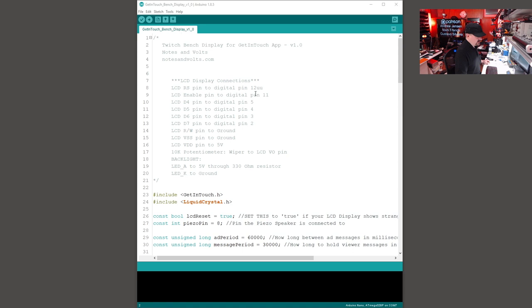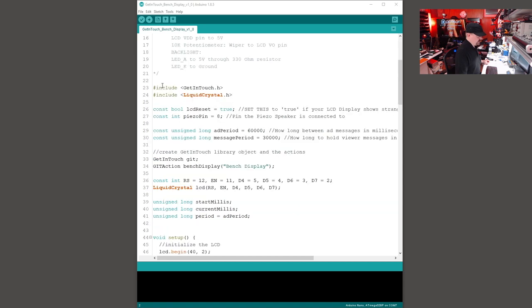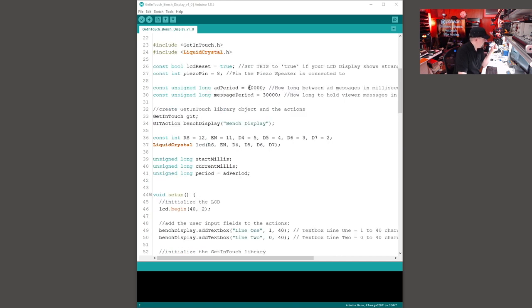So let's take a quick look at the software. So you're going to download this program called Get In Touch Bench Display. And we're including the Get In Touch library that we installed earlier and also the Liquid Crystal library to run the display. Now, if you follow my schematic, you're going to set your piezo pin to 8. So that's where you're going to connect the piezo speaker. These two variables here are the timing or how long the ads are going to run. So 60,000 milliseconds is 60 seconds. So that means the ad is going to change every 60 seconds. When a user sends a message, it will be displayed for 30 seconds. So you can change these if you want to adjust those timings.